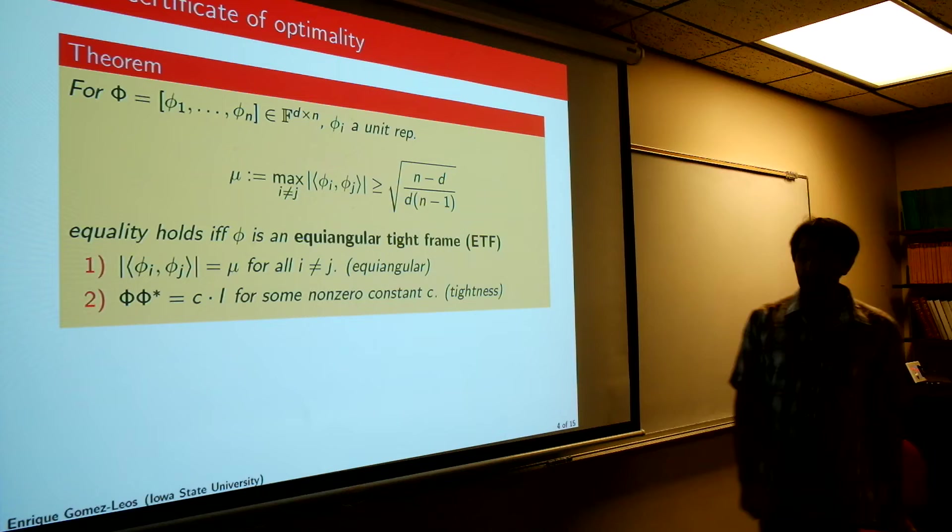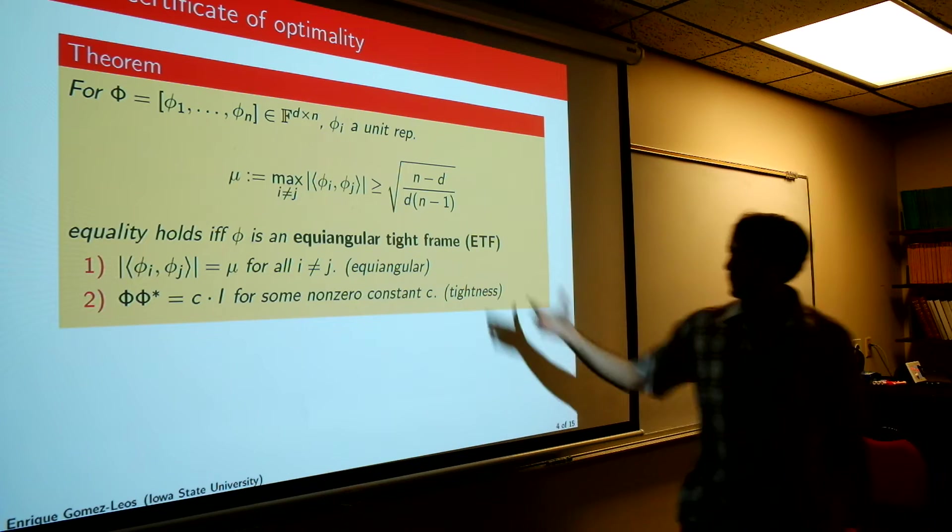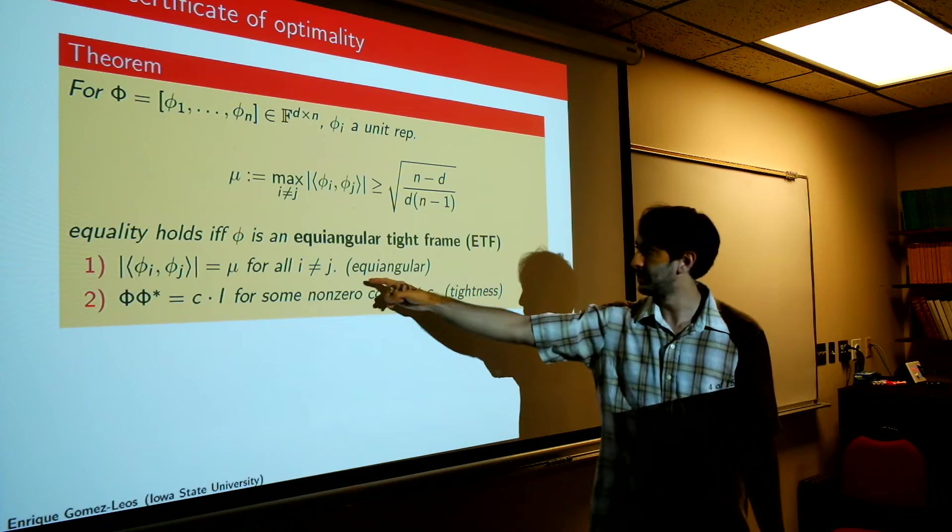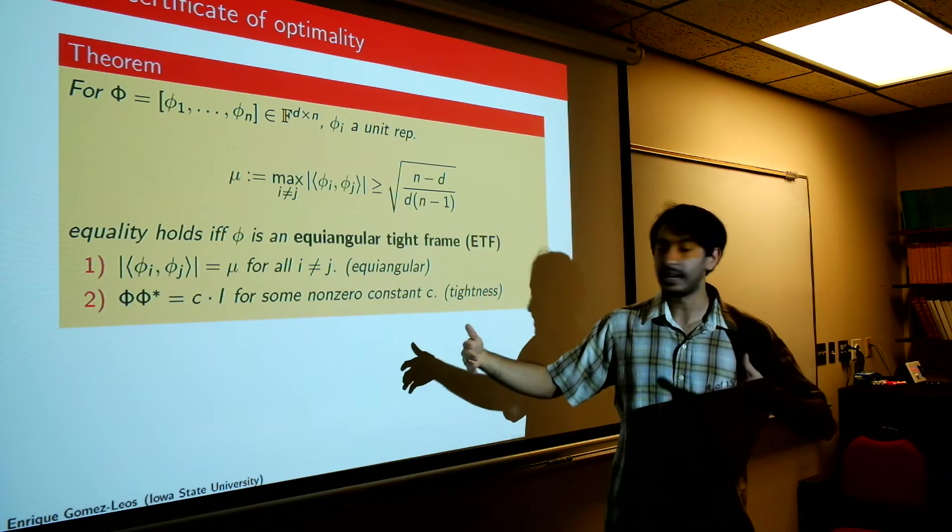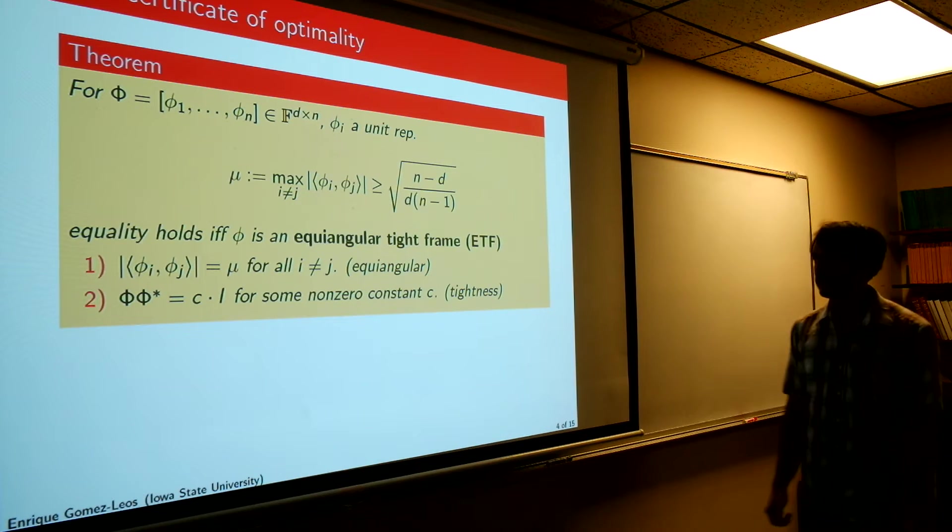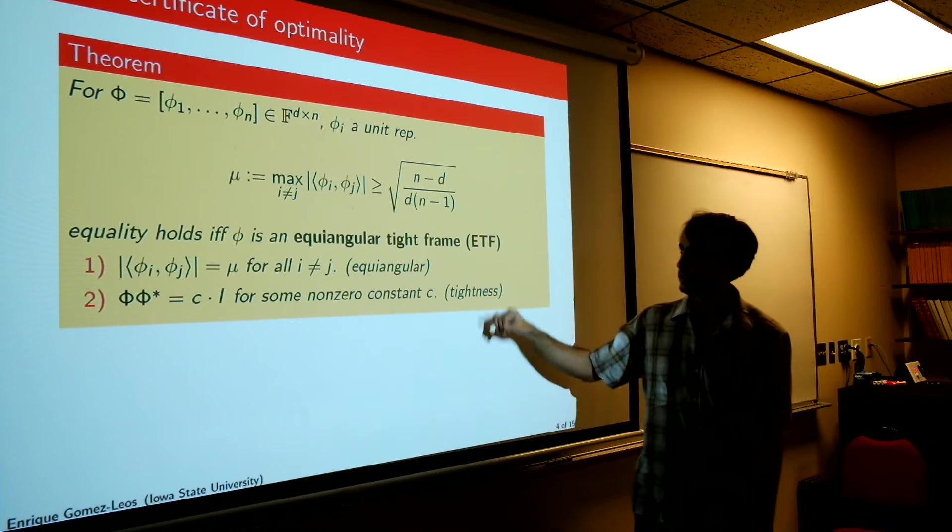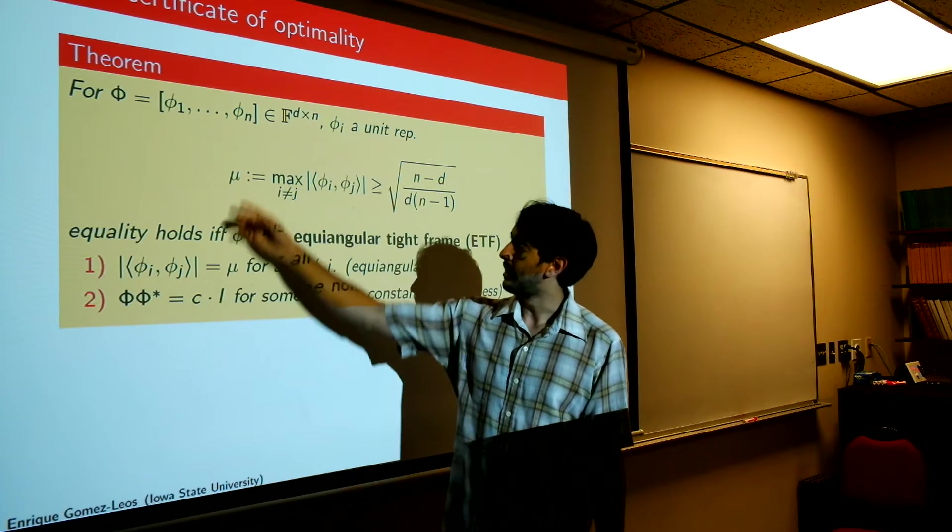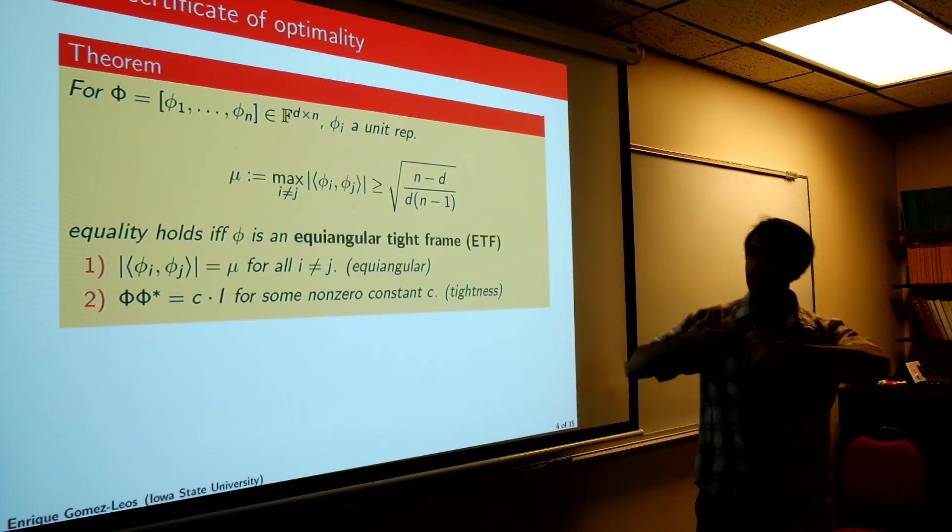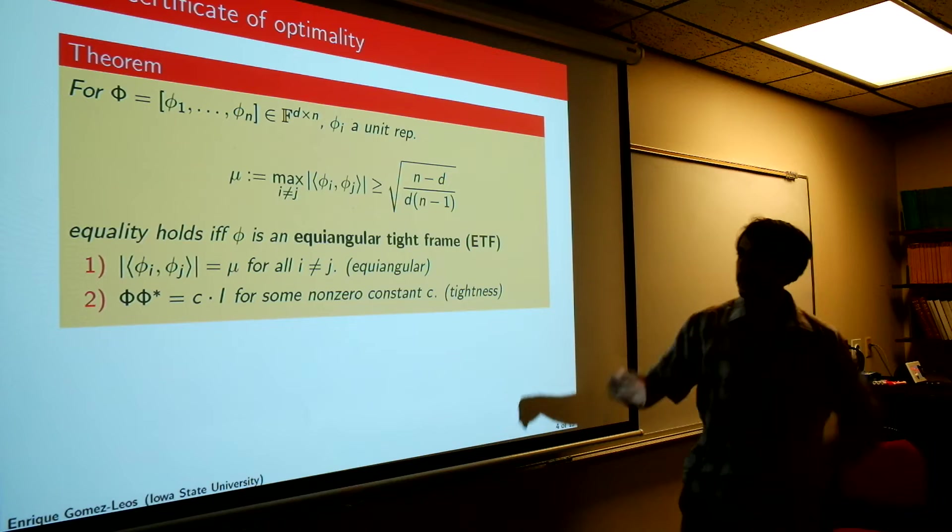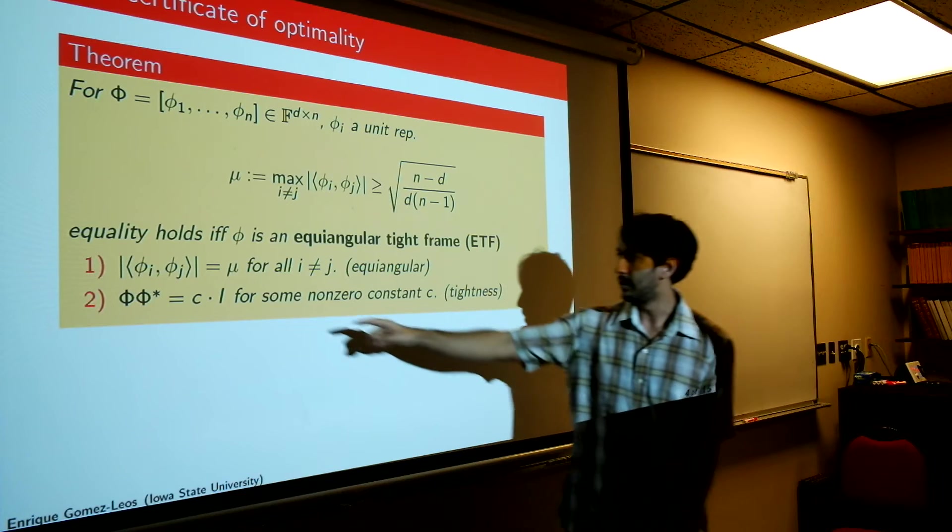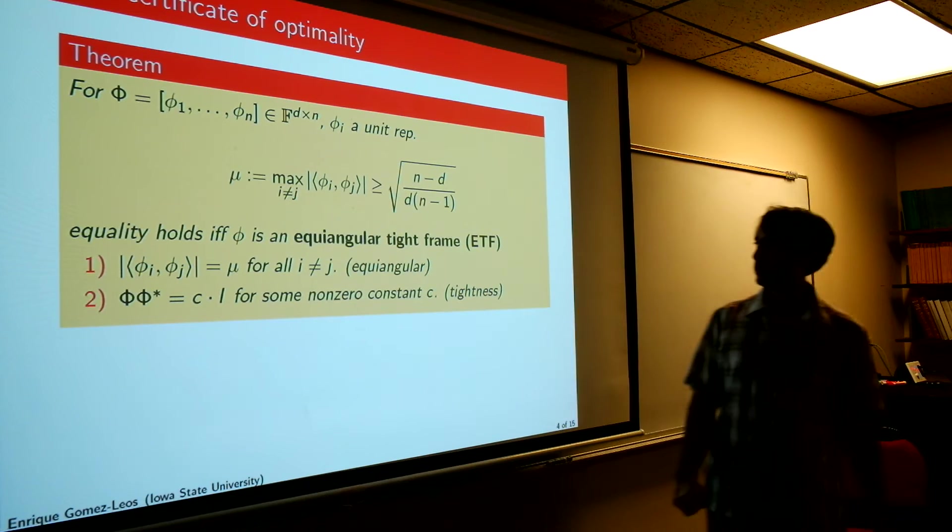ETFs are characterized by these two conditions. So the first condition is actually the case that all the angles are the same between them. This is Equiangular, same angle between them. And the second one is a condition of tightness. So the way I've stated it, it says that take this phi matrix, take your unit vector representatives of each of my lines, and just stack them as columns to a matrix. And I want to ask that phi, phi star, so the inner products of the rows are a scalar times the identity. That's what tightness is saying.